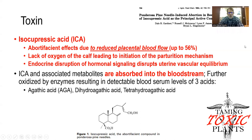The toxin that causes problems is ICA, which stands for isocupressic acid. This has abortifacient effects because it reduces blood flow to the placenta by up to 56%. This leads to a lack of oxygen to the calf in the uterus, which confounds the parturition or calving mechanism. There is also endocrine disruption of hormonal signaling, which disrupts uterine vascular equilibrium. Importantly, isocupressic acid and other metabolites get absorbed into the bloodstream and ultimately reach the calf in the uterus.